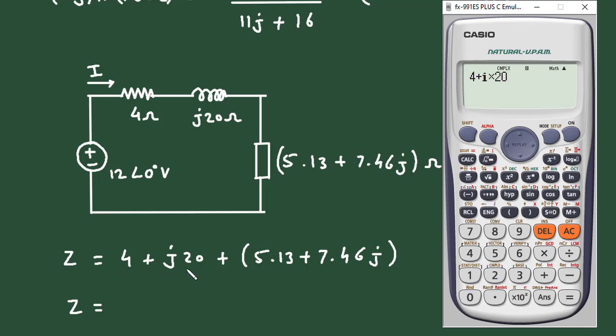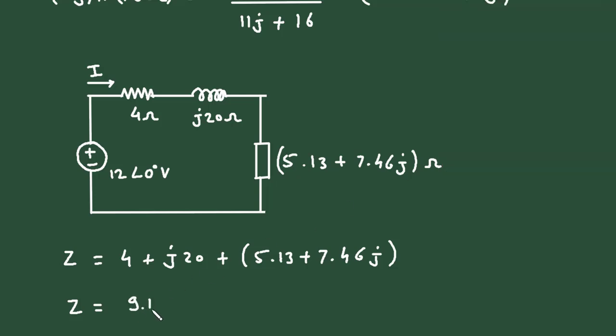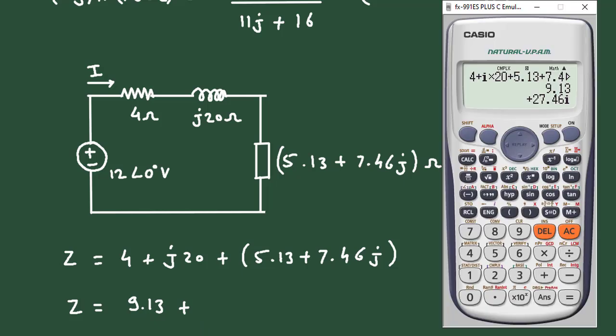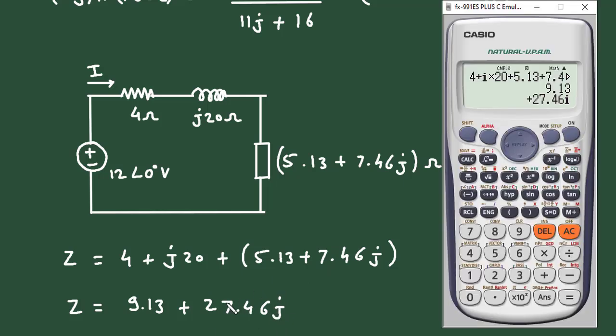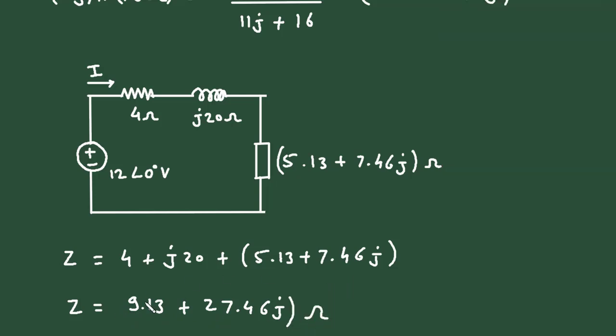So therefore Z is equal to 4 + j20 + 5.13 + 7.46j. This is equal to 9.13 + 27.46j. And since it is impedance, its unit will be ohm.